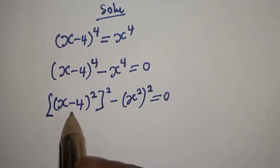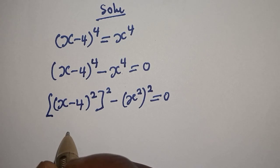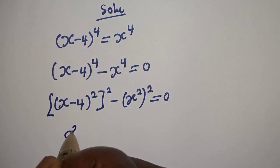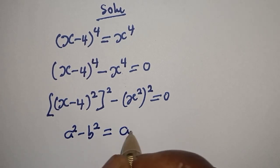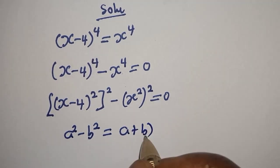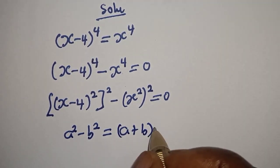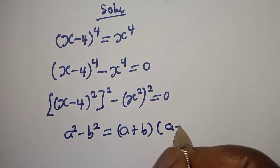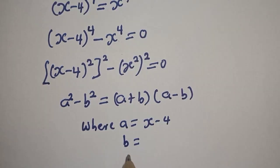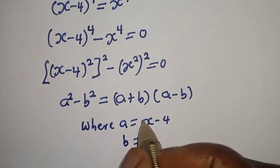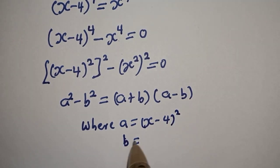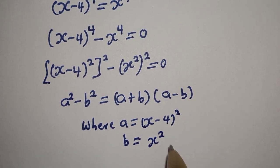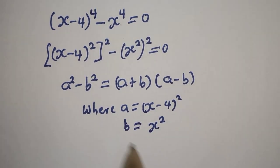This is in the form of a perfect square. If you have A squared minus B squared, this is equal to A plus B multiplied by A minus B, where A is equal to (S minus 4) squared and B is equal to S squared. Then let's substitute.